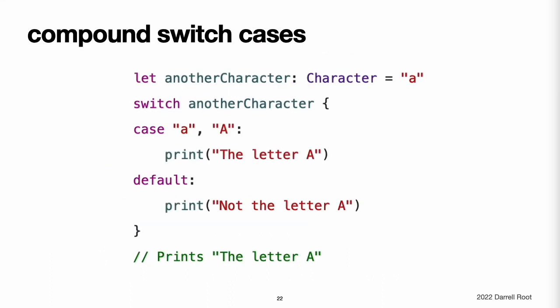To make a switch with a single case that matches both lowercase a and uppercase A, combine the two values into a compound case, separating the values with commas. For readability, a compound case can also be written over multiple lines. For more information about compound cases, see compound cases. Note: to explicitly fall through at the end of a particular switch case, use the fallthrough keyword as described in fall through.